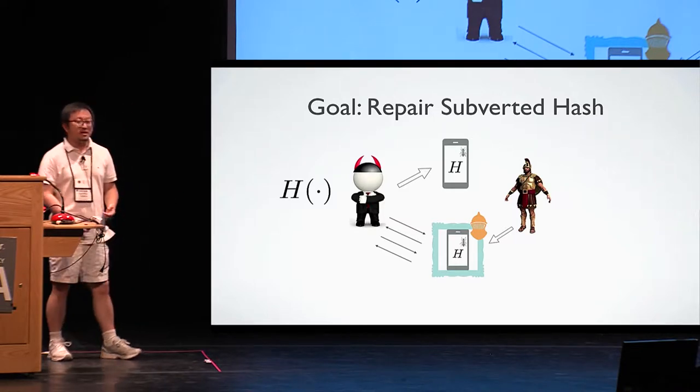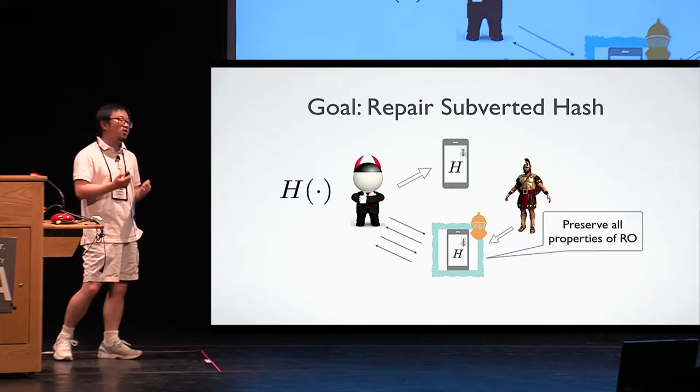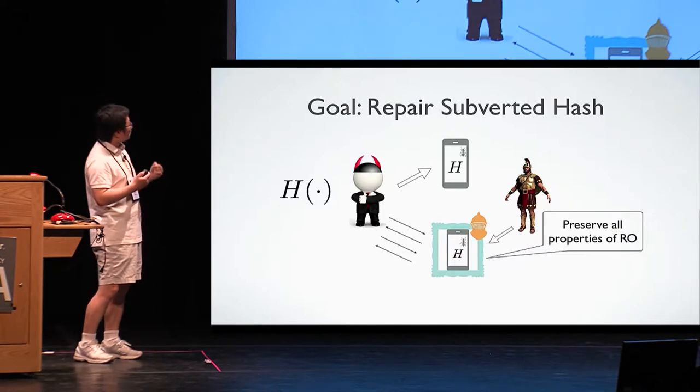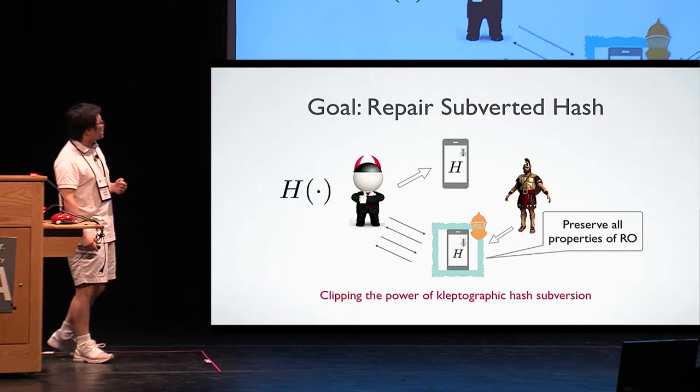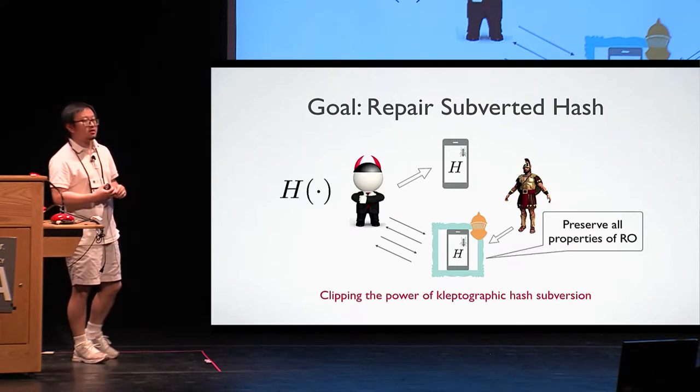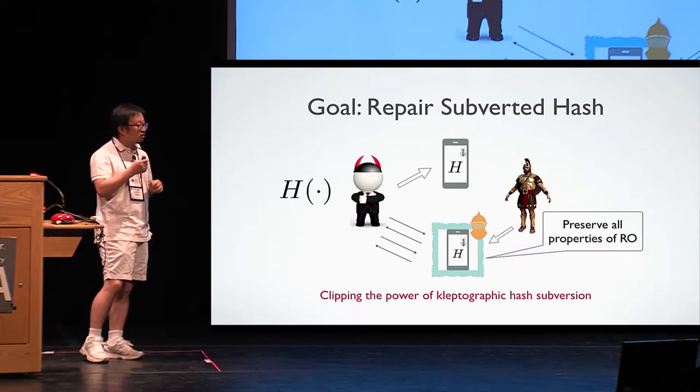So what do we mean? In a high level we want to preserve all the properties of a random oracle if the original specification is assumed to be a random oracle. So in this way, we want to clip the power of such kleptographic attacks on the hash function.